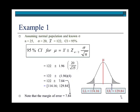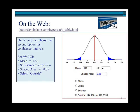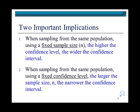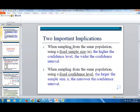That's really it. So a couple of final notes here, two important implications. One is when sampling from the same population using a fixed sample size, the higher the confidence level, the wider the confidence interval. In other words, if you raise your confidence level from, let's say, 95% to 99%, your confidence interval would be wider. And so far, I should keep the sample size the same. So let's see what this really implies.